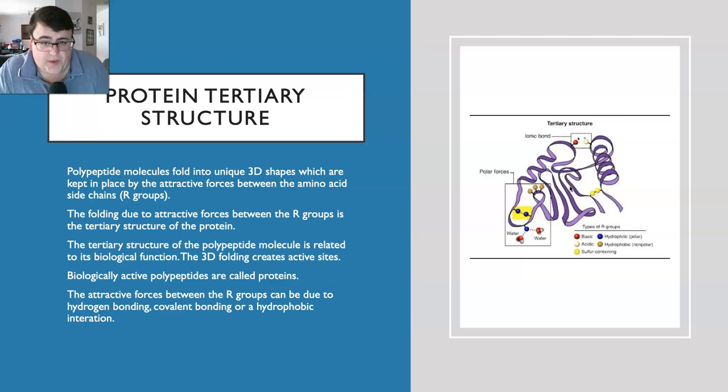Just summarizing: we had the primary structure which was the sequence of amino acids. That primary structure determined how they were going to be folded - the alpha helix or the beta sheet. Whatever side chains were attached to those folded proteins and how they attracted to each other determined the overall 3D shape, and hence the function of that protein.